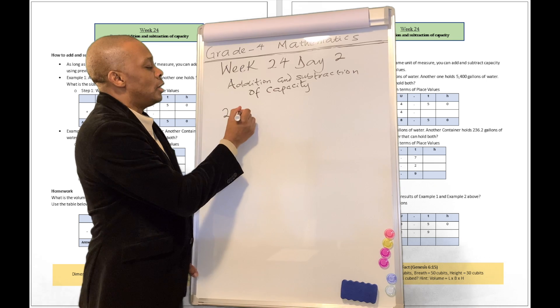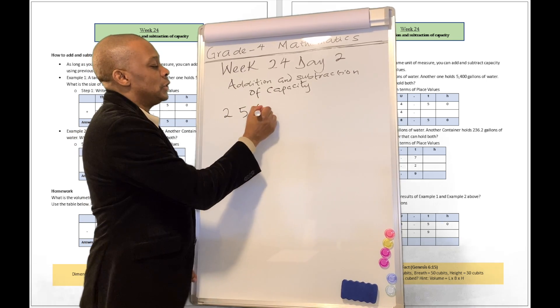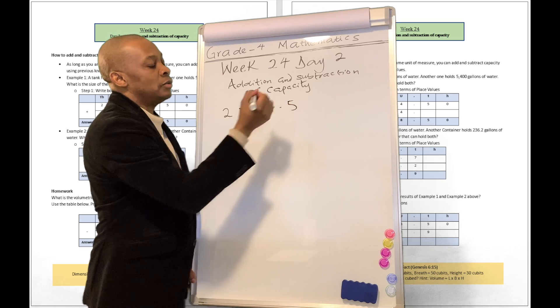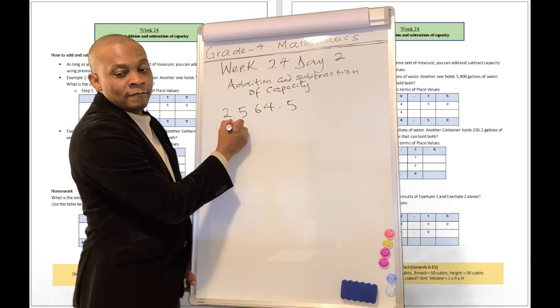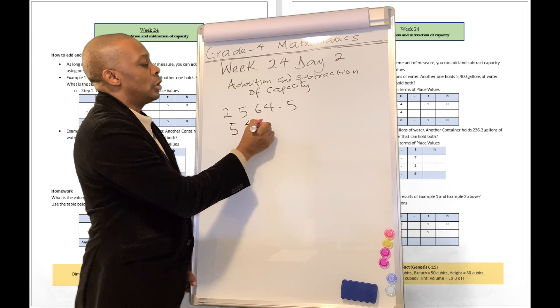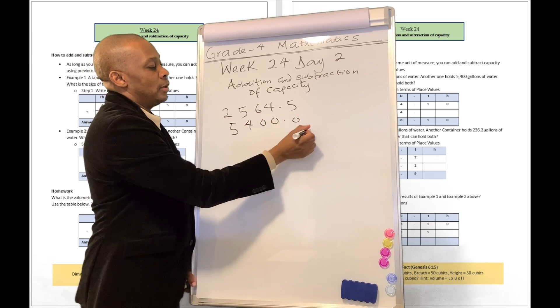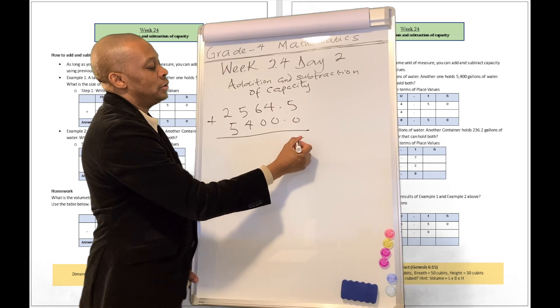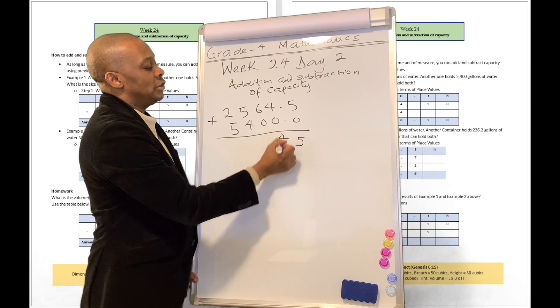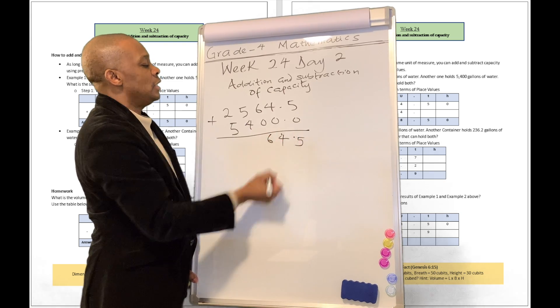So tank number 1: 2,564.50. Another tank: 5,400. Just add it all together. 5 plus 0 is 5, 4 plus 0 is 4, and this is 6.